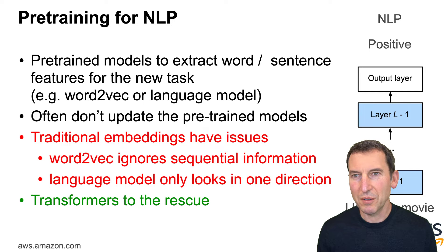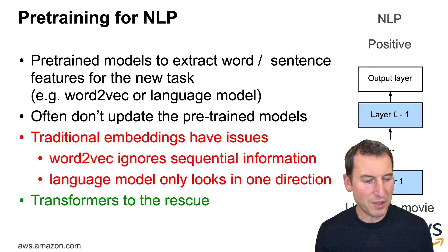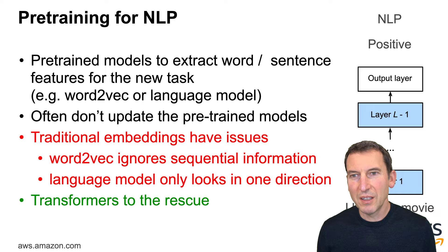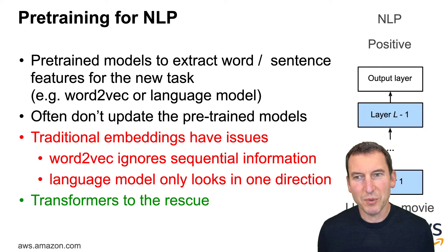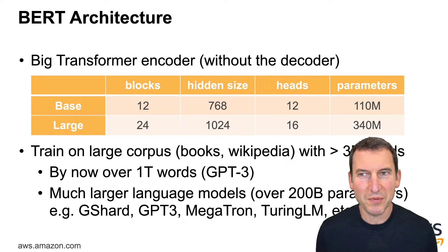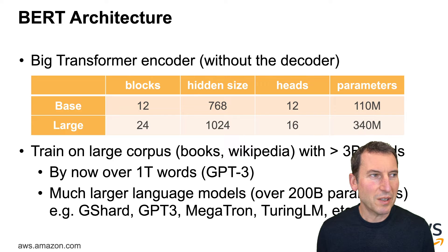Word2vec and other models didn't really use word order that much, partly by necessity because there isn't much you can model without very costly approaches. Traditional embeddings therefore ignore a lot of longer-range sequential information, and language models that only look in one direction are limited. Transformers address this. BERT was the first instance of a very large transformer encoder — there were previous models, but BERT really drove home that message.